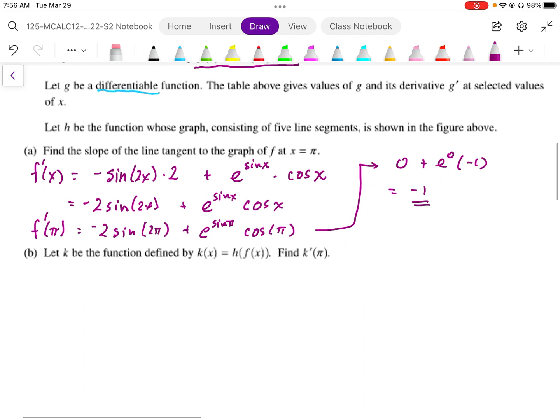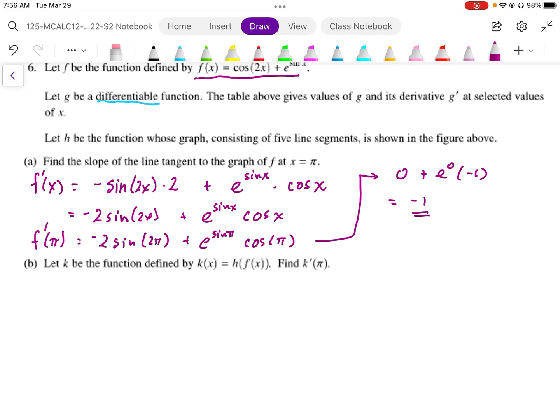Part B says, let k be the function defined by h of f of x. And it asks us to find the derivative at pi. So, here we need to first of all differentiate using the notation. So if I want to find k prime, what I'm going to do is I'm going to differentiate this notation. So I'm going to differentiate the outside. And then using chain rule, I'm going to differentiate the inside expression. So there's my expression for my k prime.